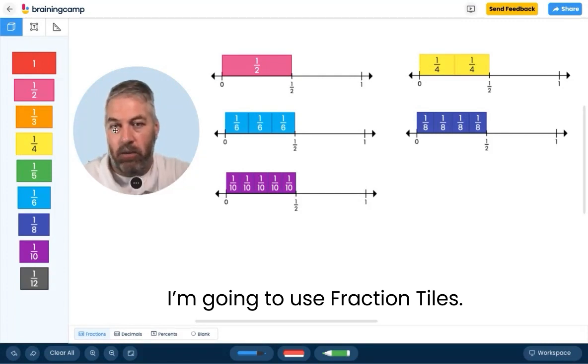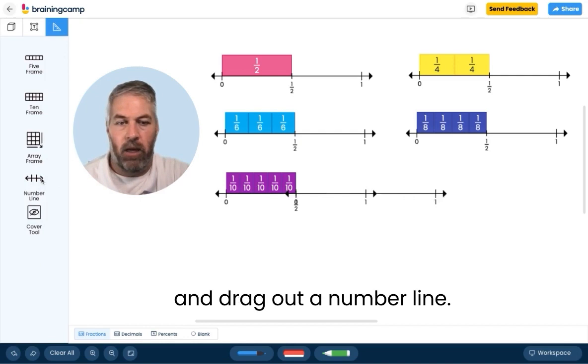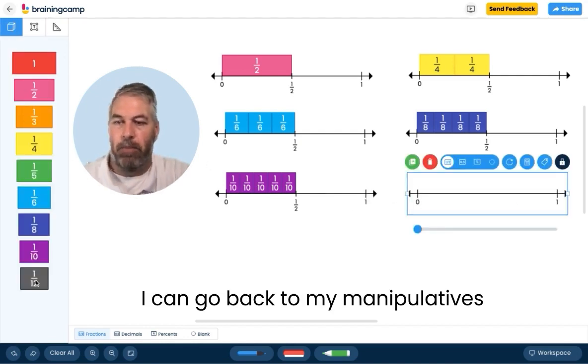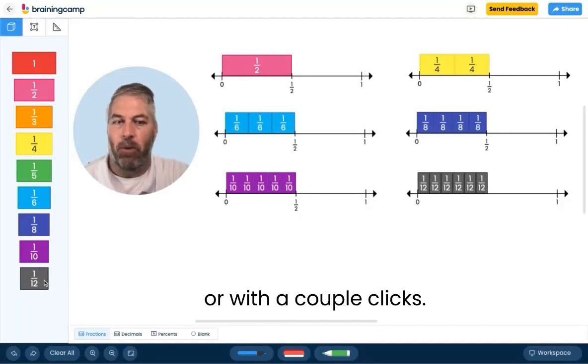I'm going to use Fraction Tiles. To add a number line, I can come to my tool tray and drag out a number line. Then I can go back to my manipulatives and add them one by one or with a couple clicks.